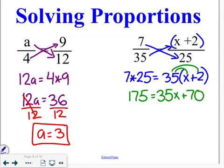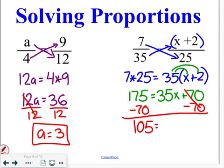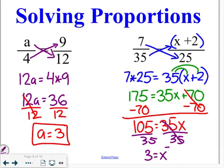Continuing to solve using SADMEP, we're going to subtract 70 from both sides, which gives us 105 is equal to 35x. Finishing out the problem, we're going to divide both sides by 35, which gives us an answer of 3 is equal to x.